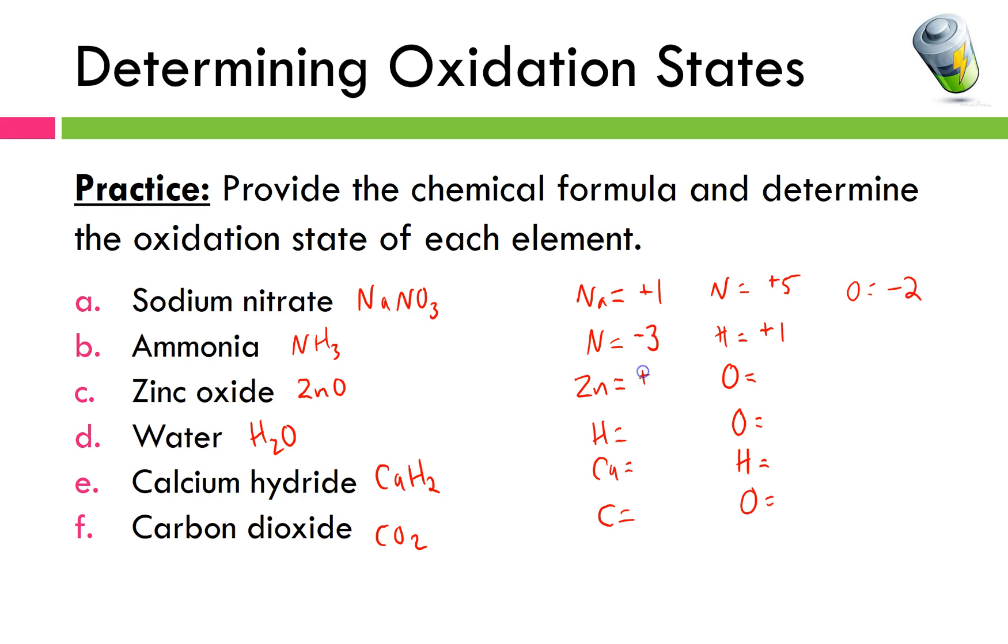So I got plus two and minus two for zinc and oxygen respectively. I've got plus one for hydrogen and minus two for oxygen in water. For calcium hydride I've got plus two for calcium and a minus one for hydrogen, and in carbon dioxide oxygen will be minus two and carbon will be plus four. There's some more practice problems for you to try out. Definitely take the time and make sure you've got this down.